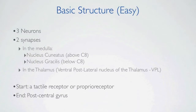So let's go over the basic structure — it's very easy. You have three neurons, two synapses. One synapse occurs in the medulla, in either the nucleus cuneatus or the nucleus gracilis, and the other synapse occurs in the thalamus, in the ventral post-lateral nucleus of the thalamus. The start of the pathway is a tactile receptor or a proprioreceptor, and the end of the pathway is in the post-central gyrus of the parietal cortex.